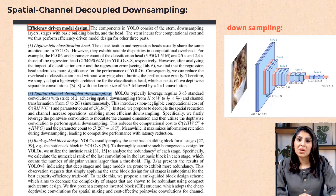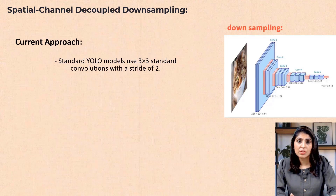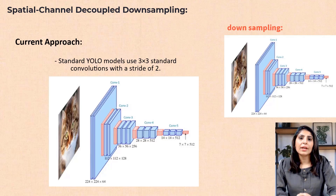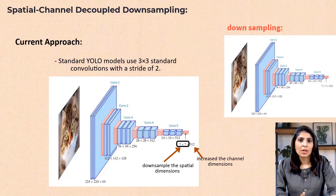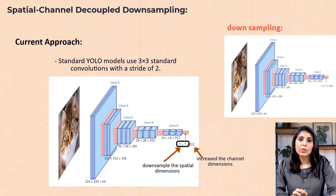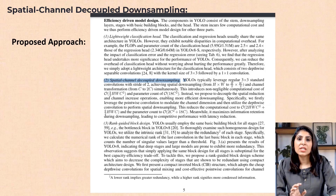In standard YOLO models, a 3x3 convolution with a stride of 2 is used, which simultaneously downsamples the spatial dimension and increases the channel dimension. This method has a high computational cost. I'll explain the full concept with an example so don't worry if it's not fully clear yet.